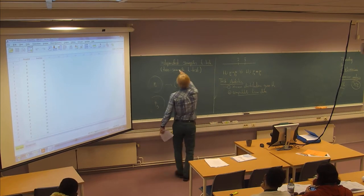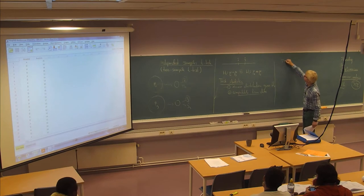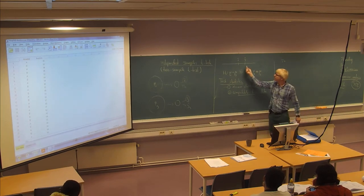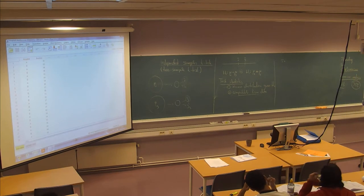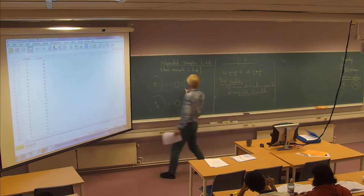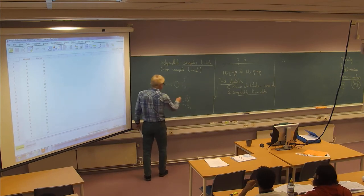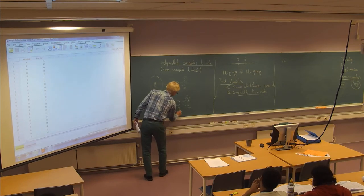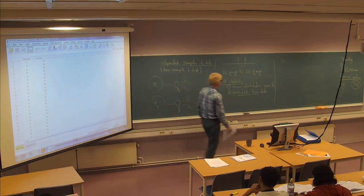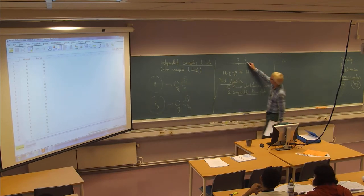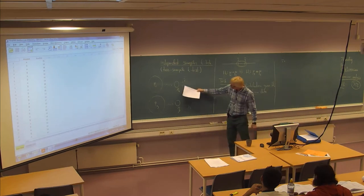And for this particular test, we usually have a test statistic that we call T, which is basically, of course we have to look at the difference between the sample means, but not only that, we have to compare that in relation to something involving both the standard deviations. In a way to decide whether this is a small or big difference, it has to be also considered given the standard deviations and the sample sizes.